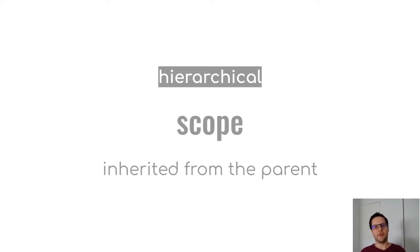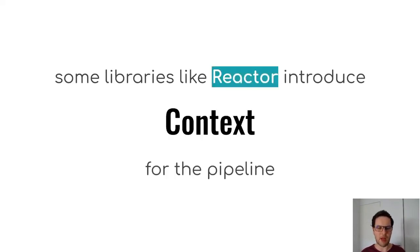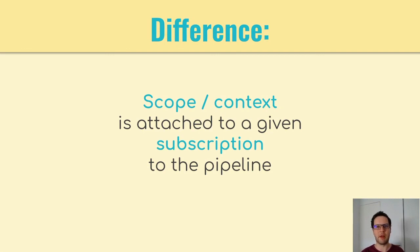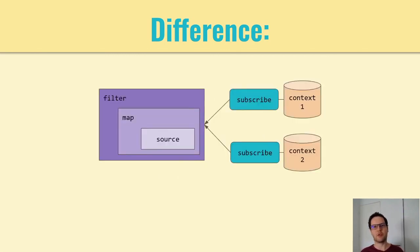Finally, the notion of scope inheritance from the parent is present in some libraries. Libraries like Reactor introduce a notion of context for the pipeline, and they do so for a particular subscription. When you subscribe to a publisher, you can pass in some context. You can subscribe multiple times to the same publisher, and you might want different contexts for each subscription — for example, a correlation ID for a particular request.